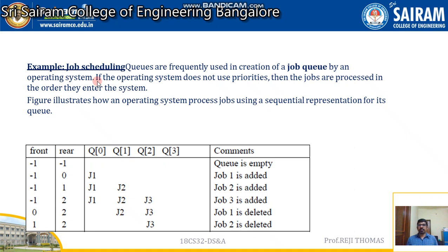There is another job arrived. If it is not prioritized, it is going to be the second job in the queue and rear is going to change its value from zero to one. Think that there is another job added to this queue — rear is going to change its position from one to two. Now we can visualize we have a queue with three jobs.